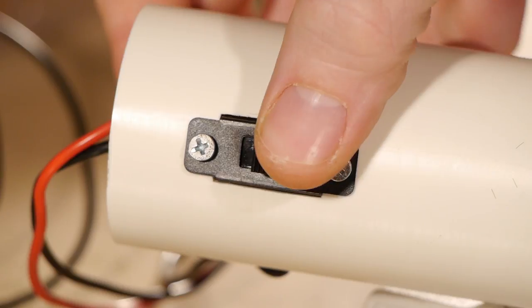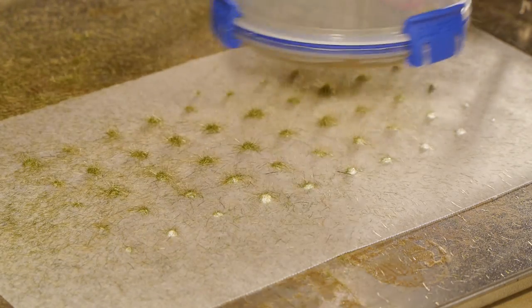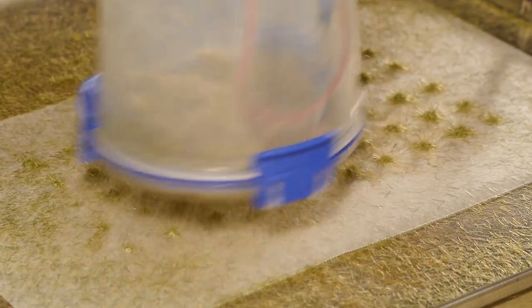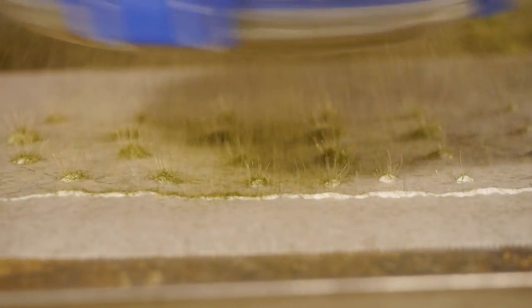Now we're ready to start applying some grass. By holding the applicator about 3 or 4cm above the tray and shaking you'll see the grass tufts come alive. I continue shaking over the glue until almost all the white spots of the glue is covered by grass fibers.